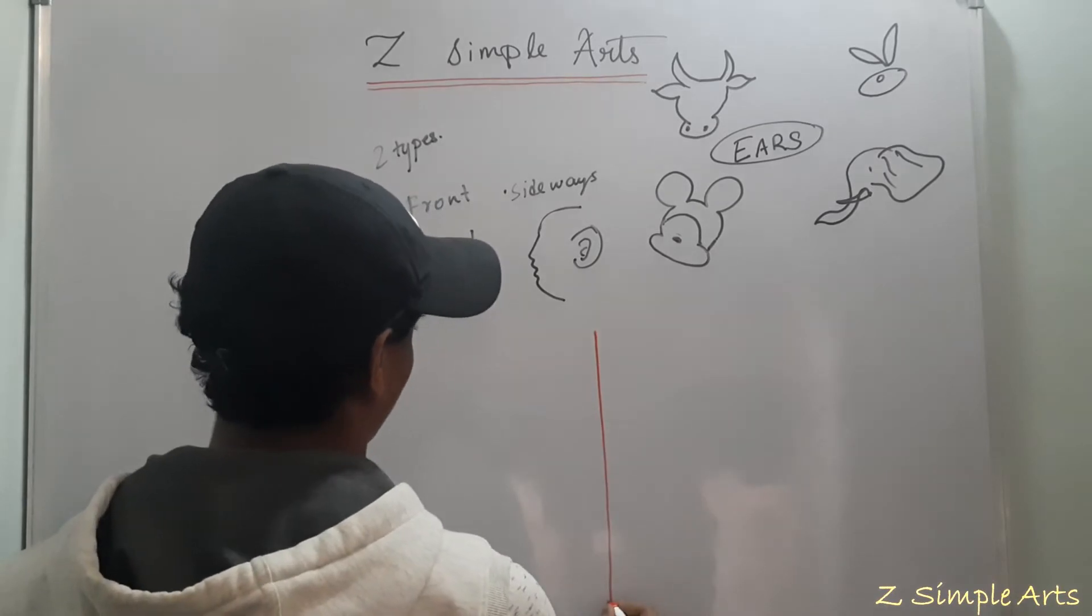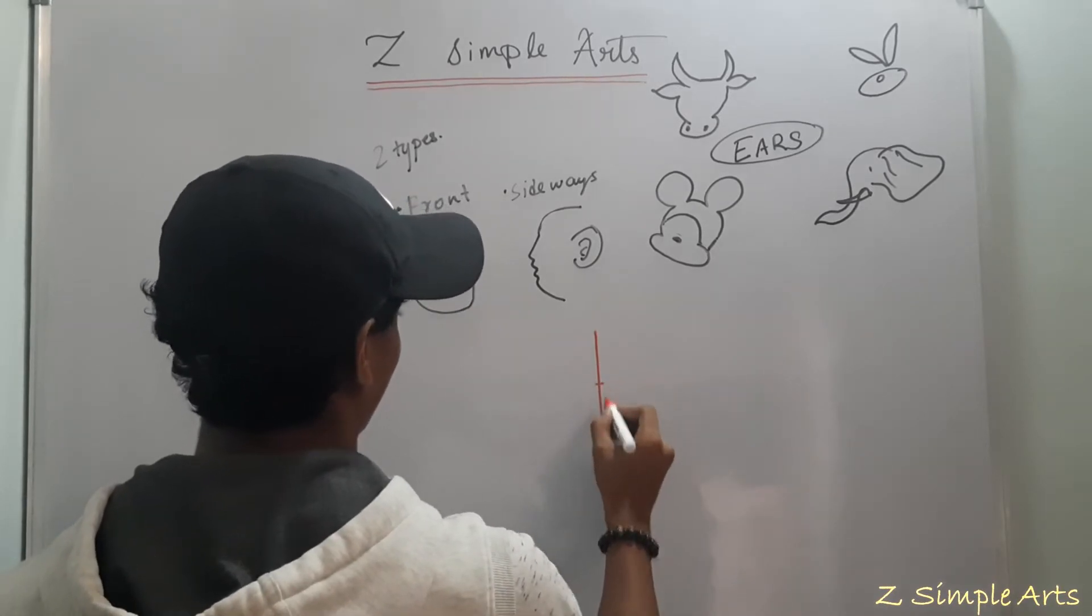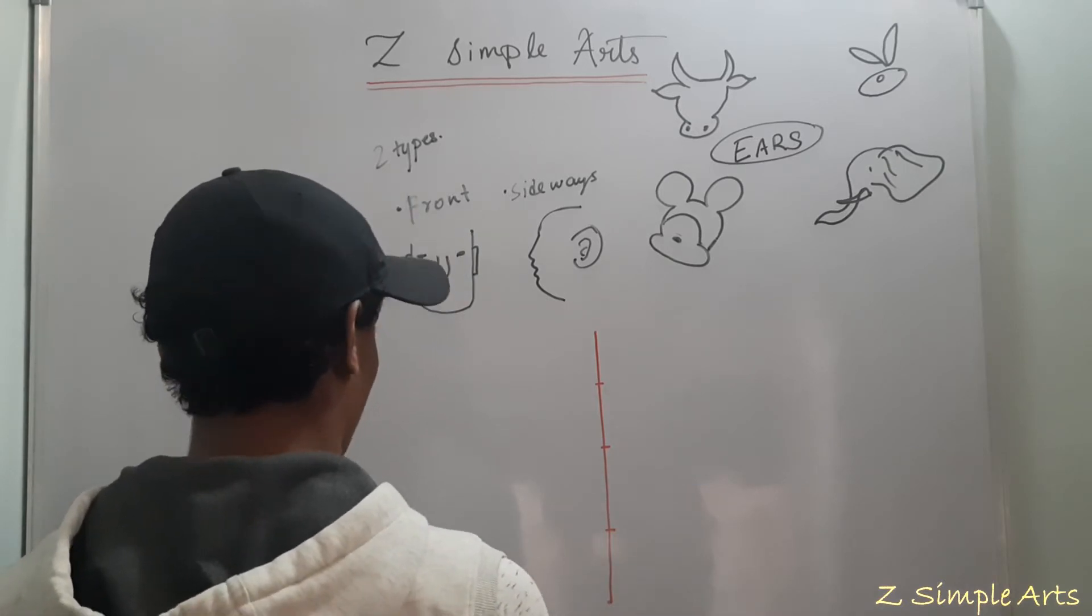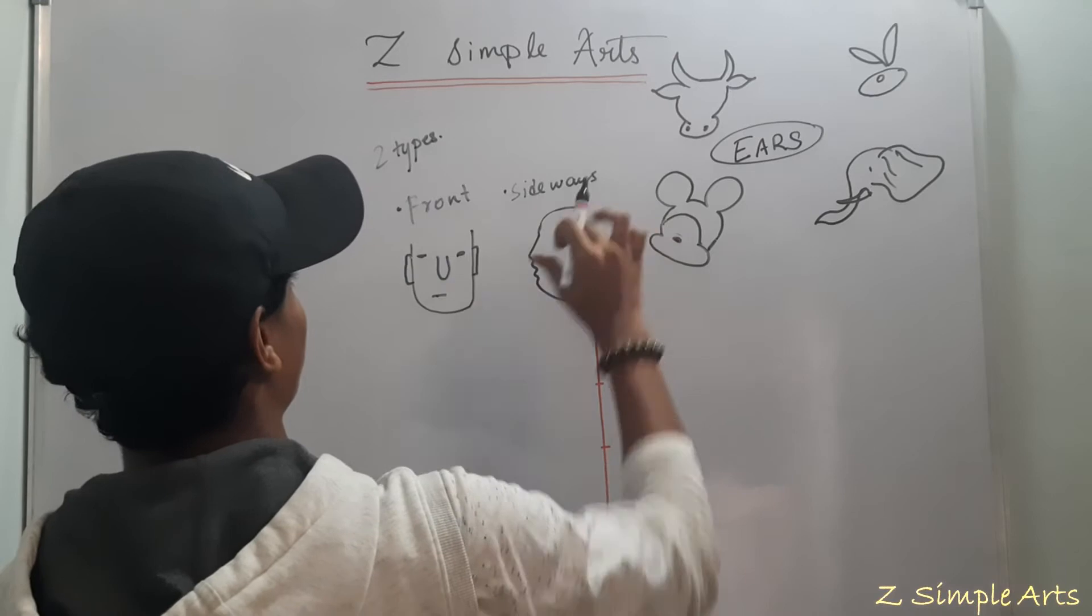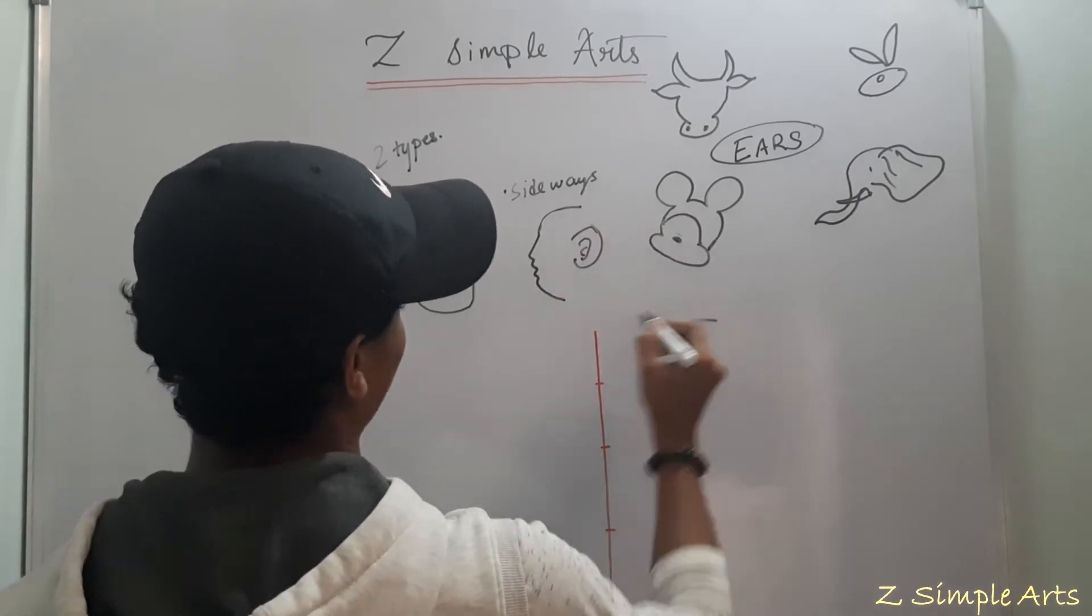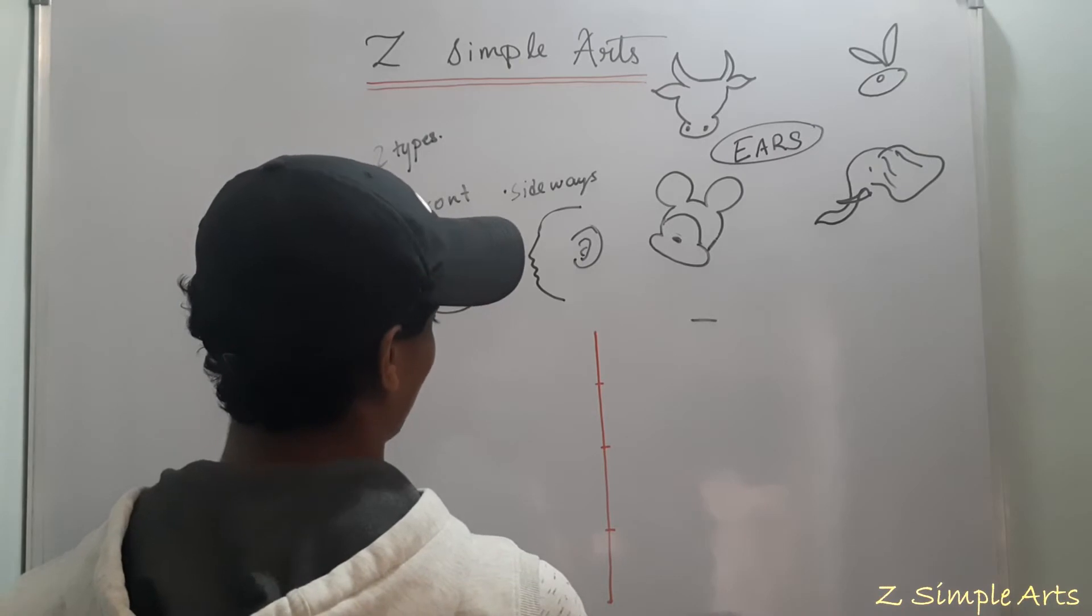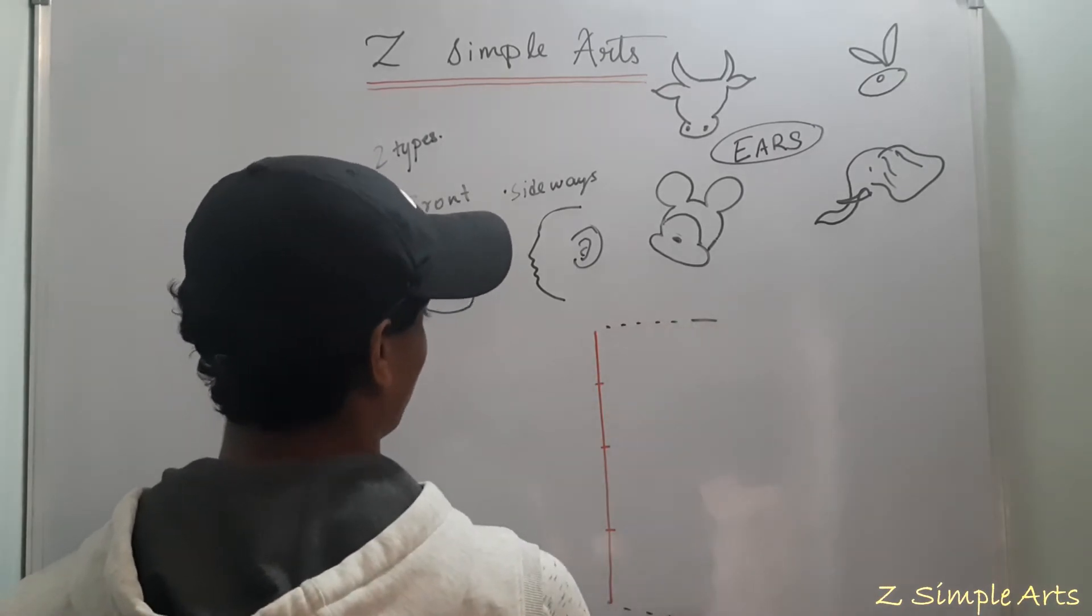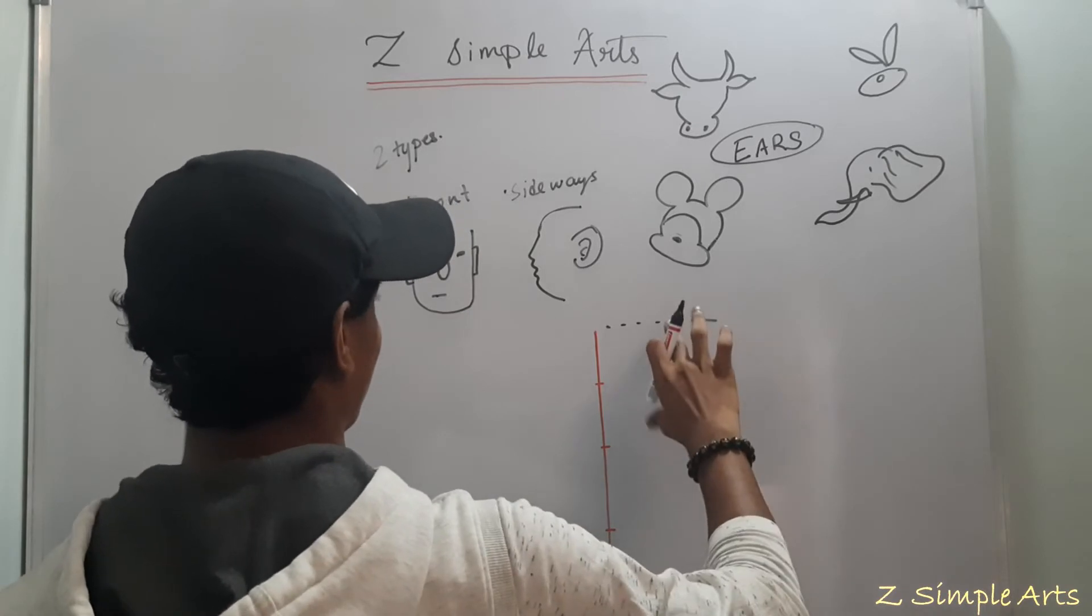Draw a line. Divide it into four parts. Since we are trying to do this side area. This is the top most point. And this will be the bottom most point.